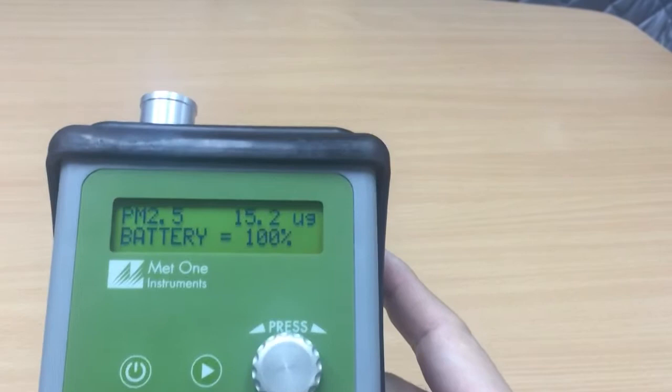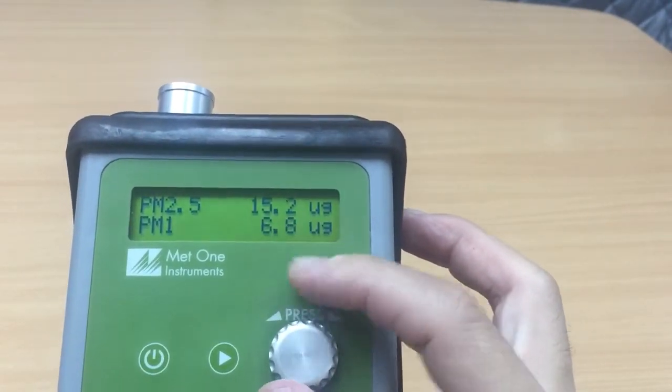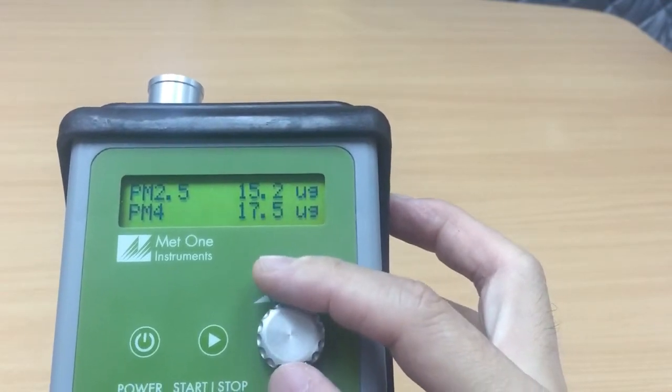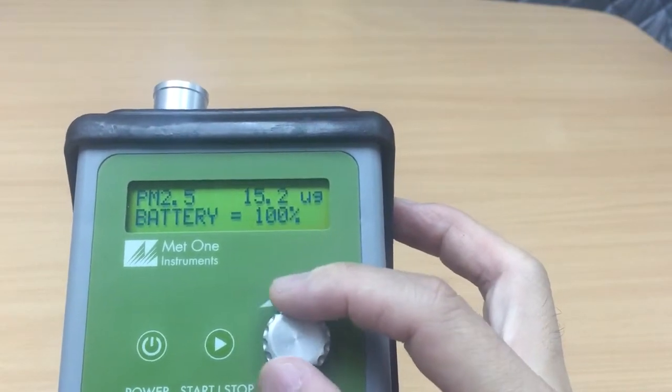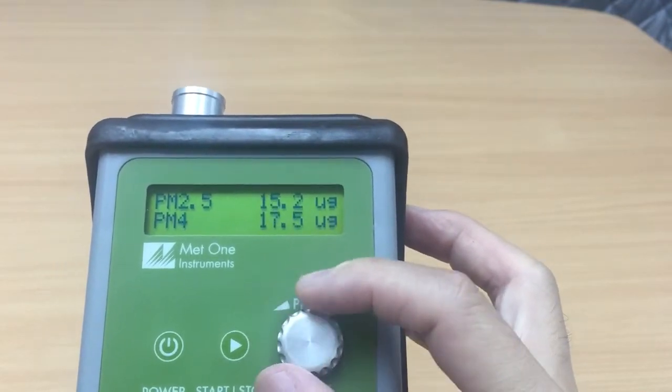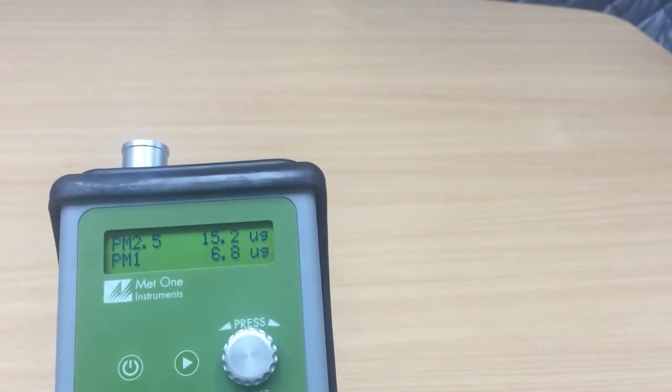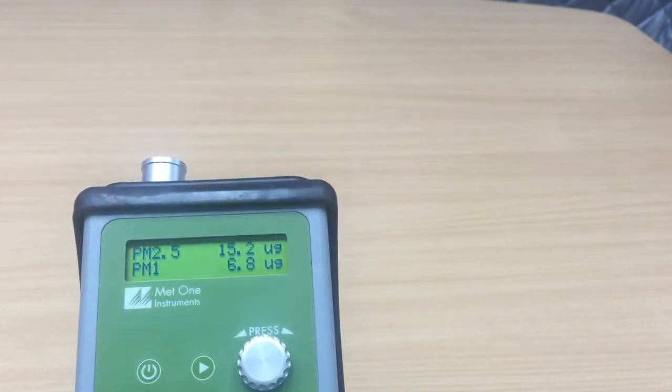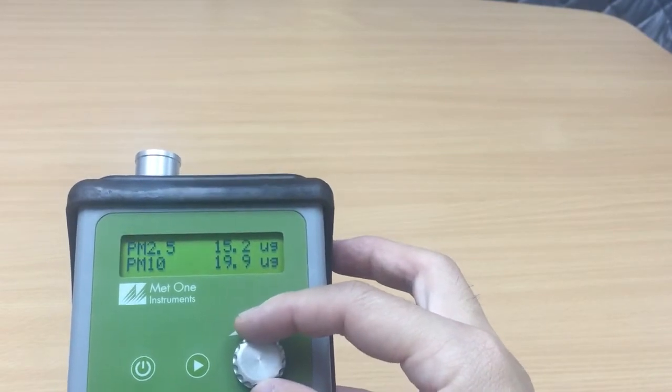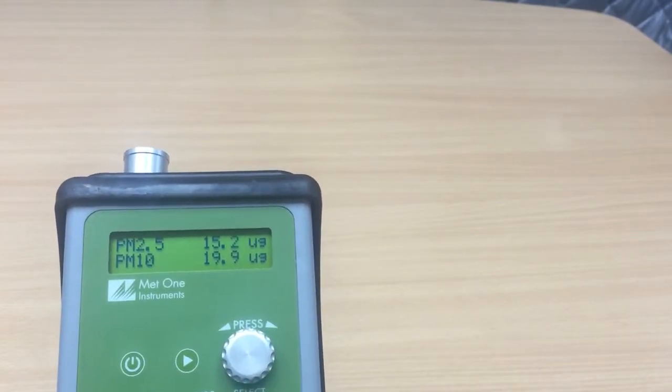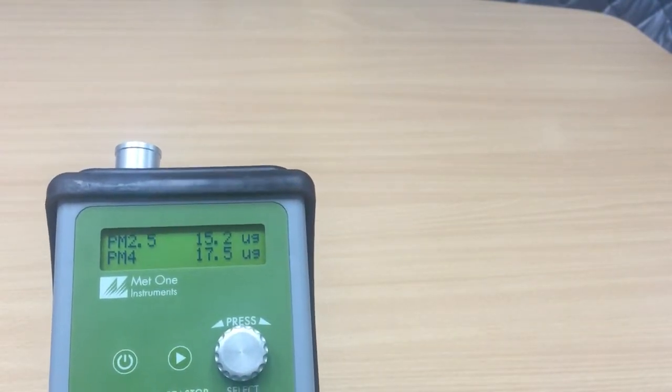Okay we got PM2.5 at 15.2 micrograms and the battery is of course 100%. Let's take a look at others. PM1 is 6.8 micrograms, PM4 is 17.5 micrograms and PM10 is 19.9 micrograms. So this is an indication of how clean or how dusty this particular room is. 15 micrograms is considered still acceptable based on indoor air quality guidelines. Typically the respirable size section is PM4 should be less than 15 micrograms.